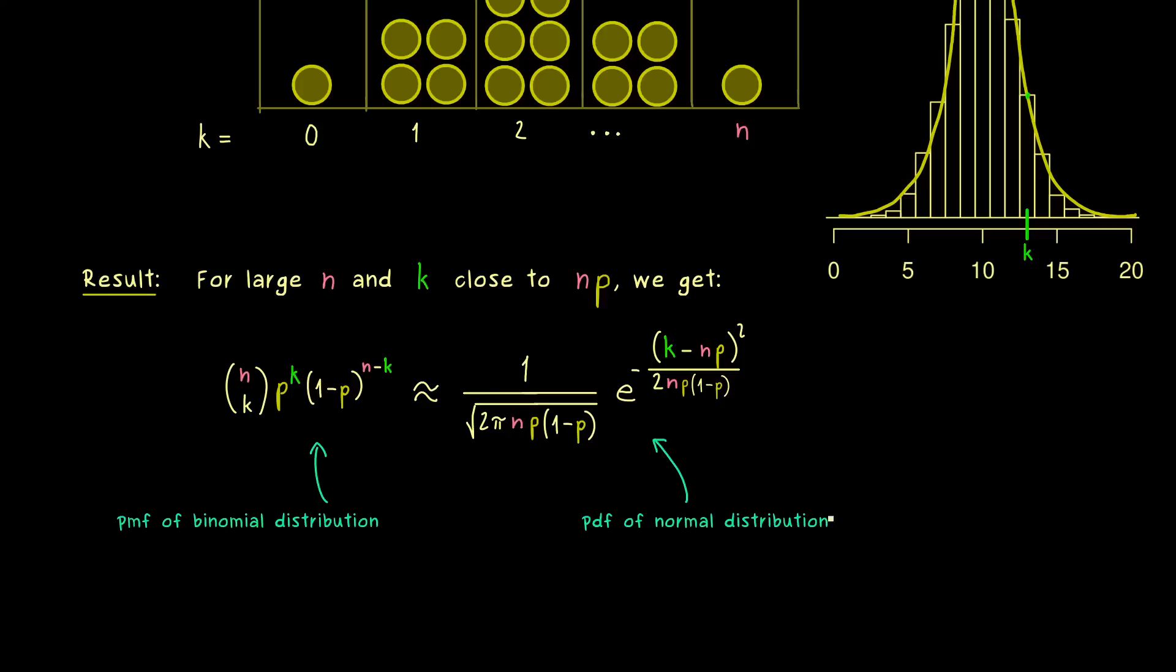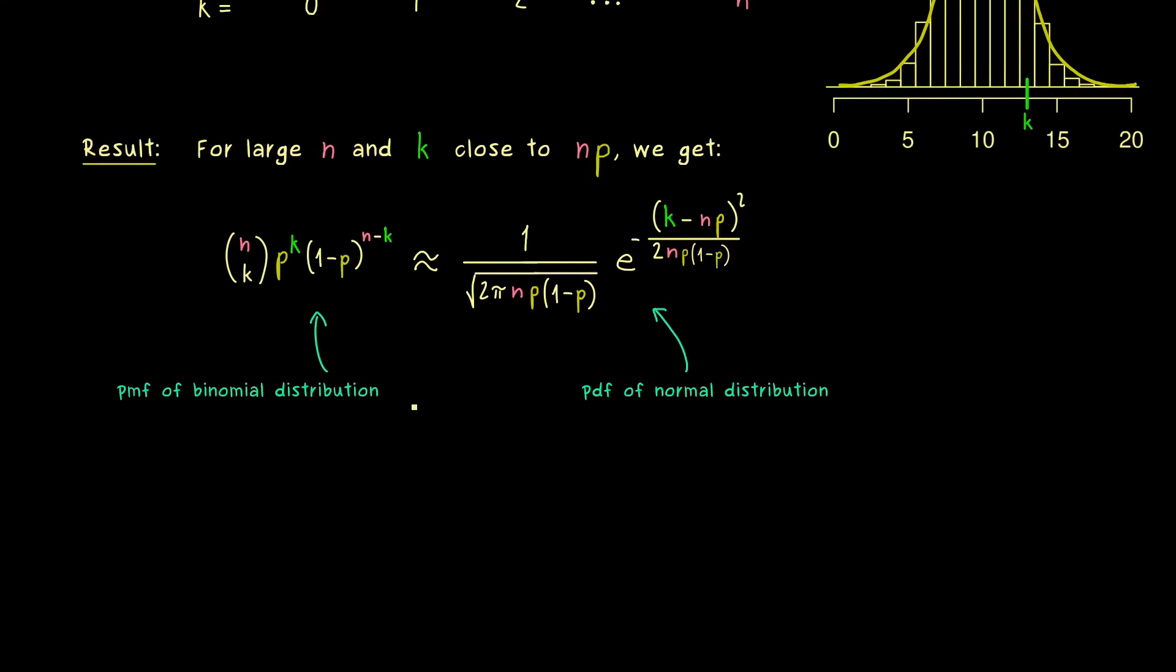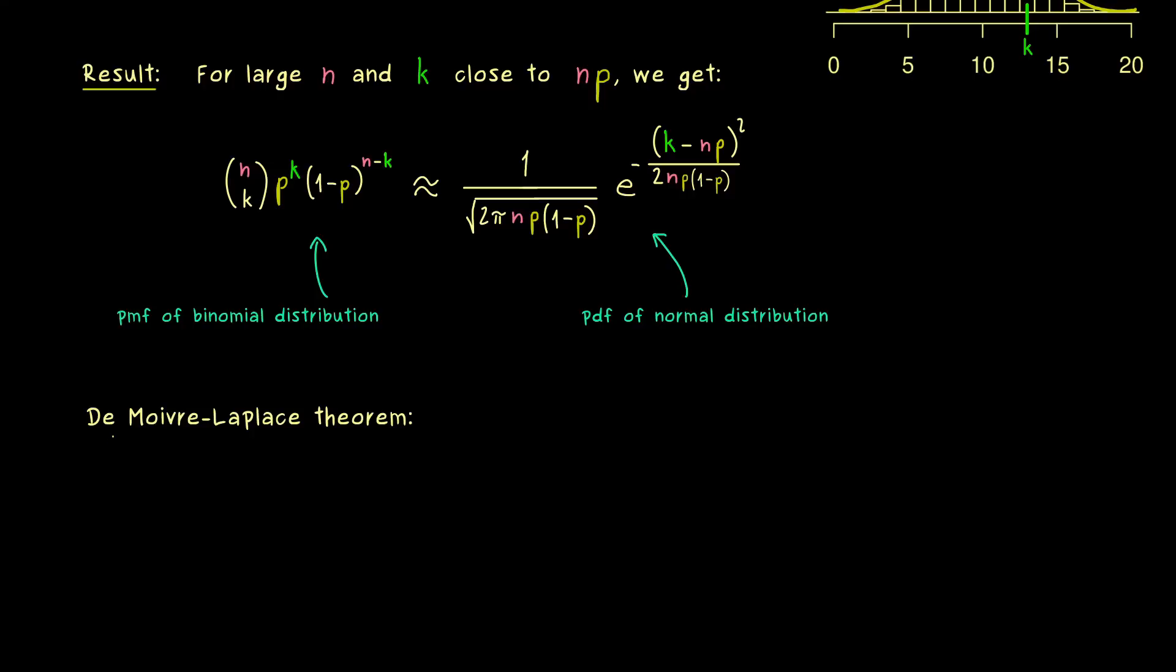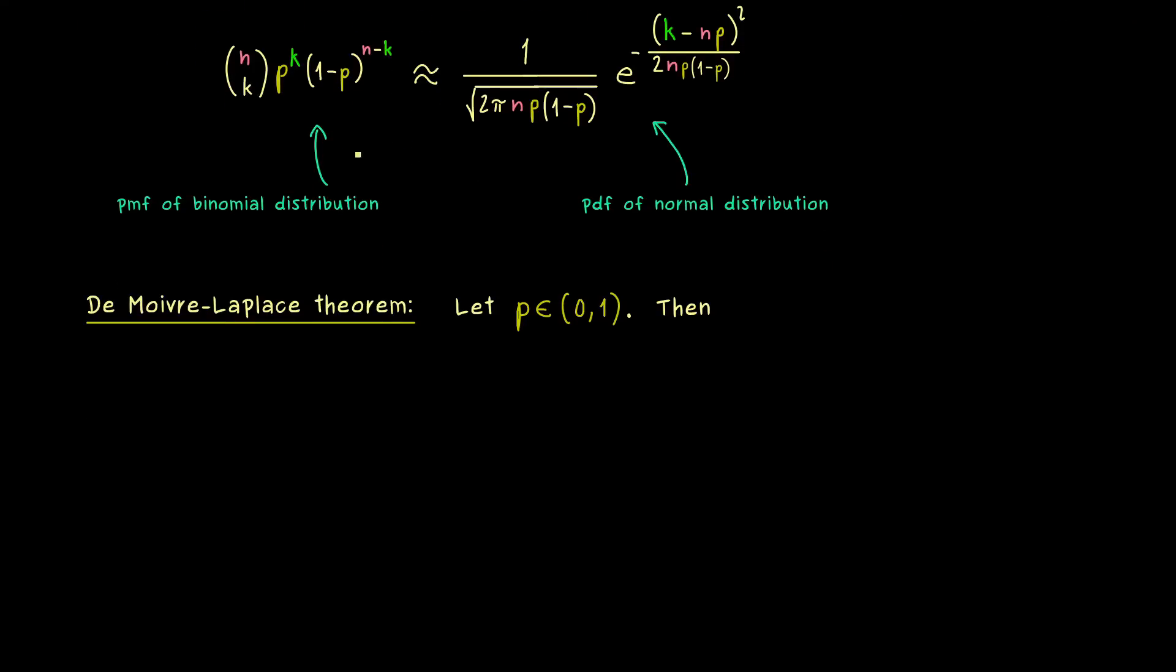However, as you can see from the mathematical point of view, this whole statement here is not really precise, but we can make it precise when we look at the limit. Hence this will now be our explicit De Moivre-Laplace theorem. And in fact the only requirement we have there is that we have a p between 0 and 1. So everything in between is possible, but 0 and 1 are excluded.